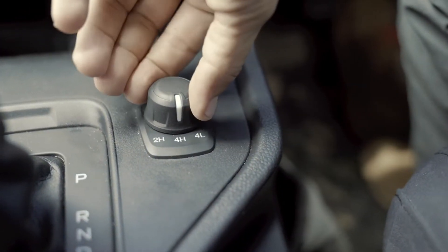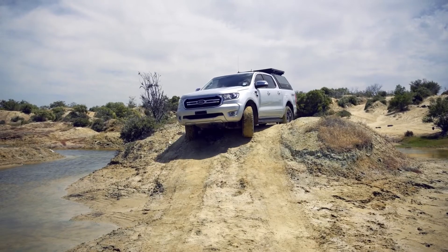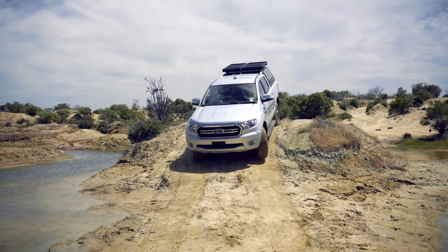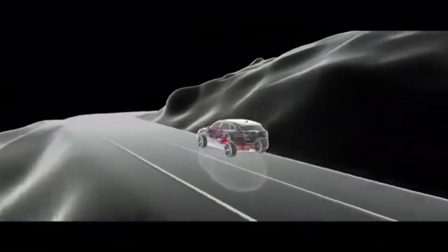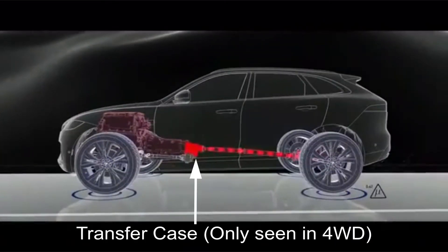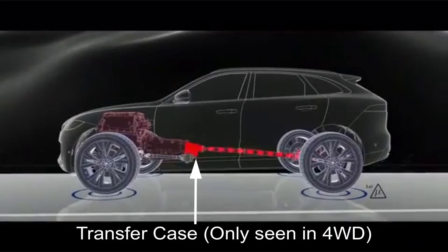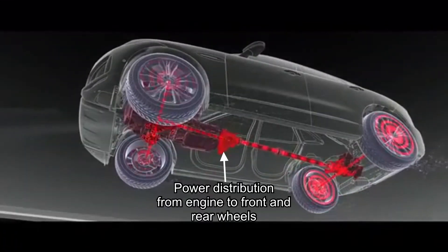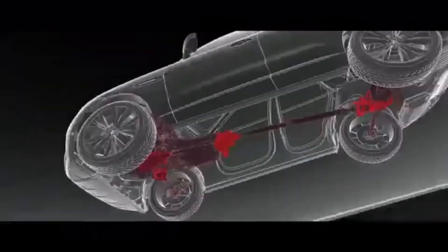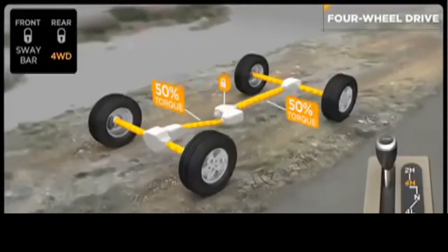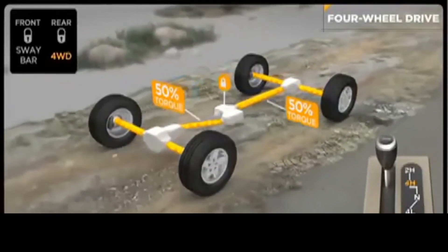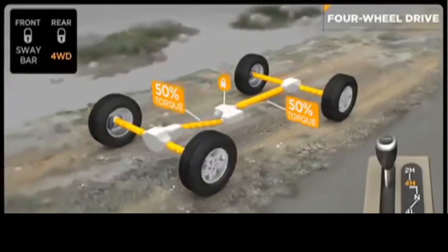The distinguishing feature of four wheel drive is that it can be manually engaged or disengaged by the driver as required. The functioning of four wheel drive relies on two main components: the transfer case and the differentials. The transfer case is a mechanical device located between the front and rear axles, and its duty is to transfer power from the transmission into the front and rear axles simultaneously. In a four wheel drive system, the transfer case locks the front axle drive shaft to the rear axle drive shaft such that the two move in complete synchrony.